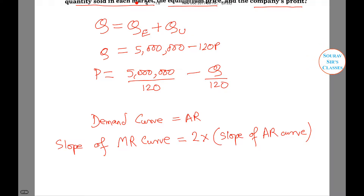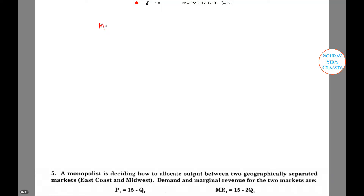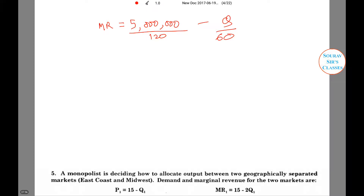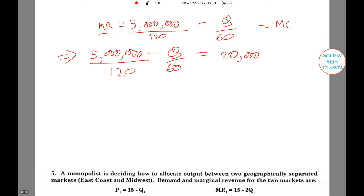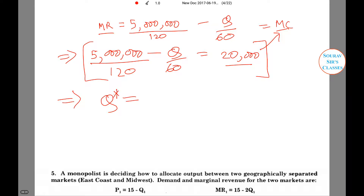According to the rule, the slope of the MR curve is always twice that of the AR curve. Thus MR equals 5,000,000/120 minus Q/60. To find the profit-maximizing quantity, we set MR equal to MC. With MC equal to $20,000, we get: 5,000,000/120 minus Q/60 equals 20,000. Solving for Q, we get Q* equal to 1,300,000.